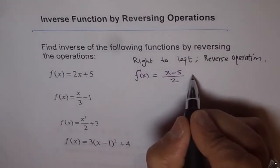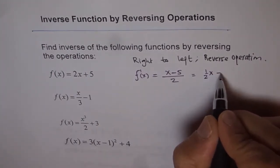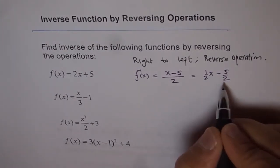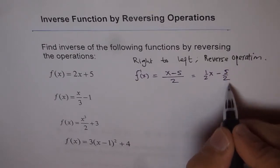At times, you may like to write it as half of x minus 5 over 2 just to give you an idea that this is a line with a slope of half and y intercept of minus 5 over 2.